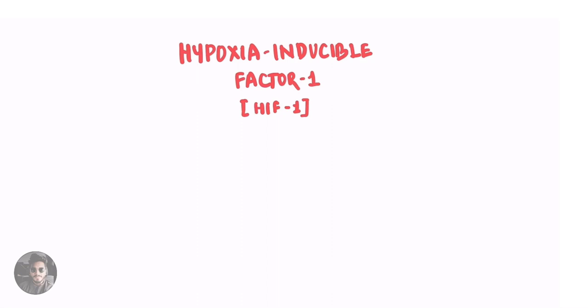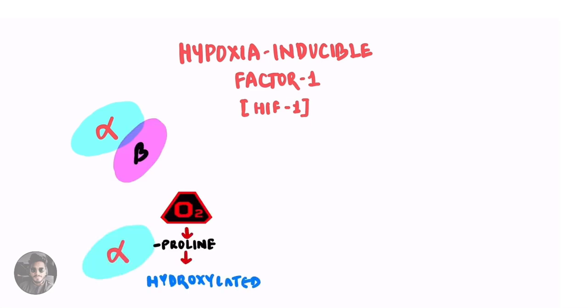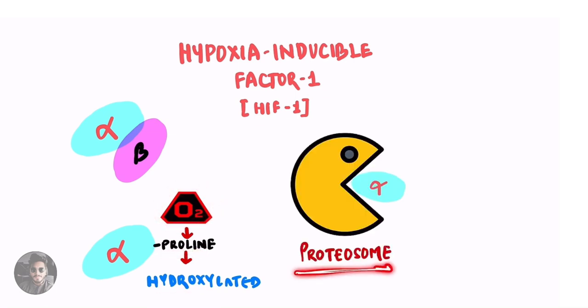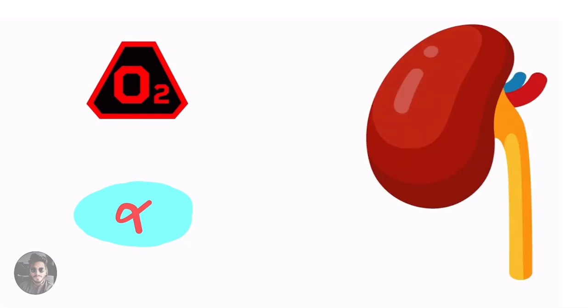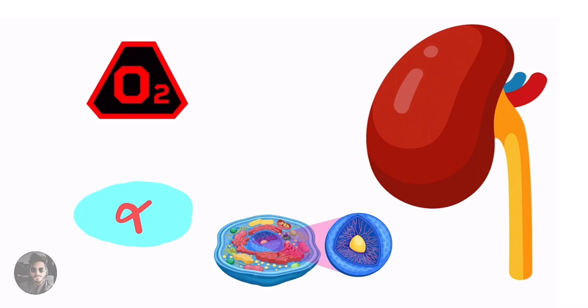Now let us see what actually happens. There is a factor called hypoxia inducible factor 1. It has two subunits, alpha subunit and beta subunit. In presence of sufficient oxygen the proline on alpha unit is hydroxylated and proteosome destroy this hydroxylated alpha subunit which makes it non-functional. But whenever there is decrease in oxygen the proline on alpha subunit is not hydroxylated and hence it acts on the cells of kidney, enters the nucleus and increases the EPO production.